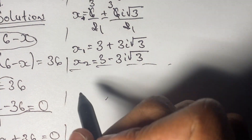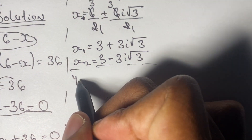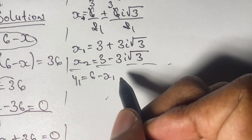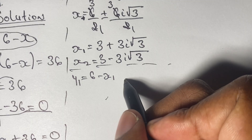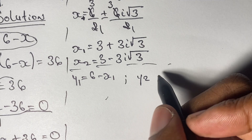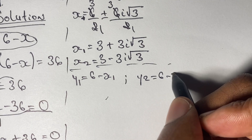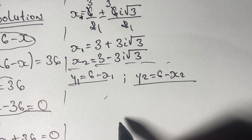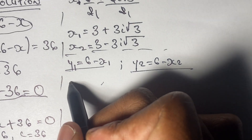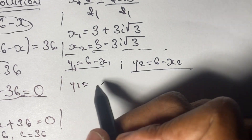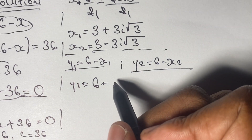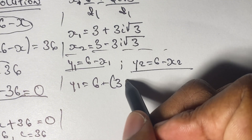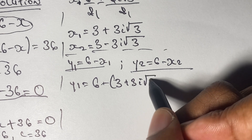Now it's time to find our solutions for y. Since we have two solutions for x, we'll also have two solutions for y. We have y equal to 6 minus x, so for the first solution of y we substitute the first value of x, and for the second solution of y we substitute the second value of x. Starting with y₁: y is equal to 6 minus (3 plus 3i√3).